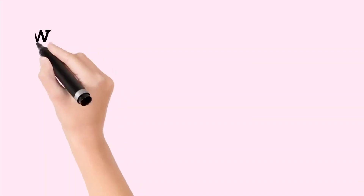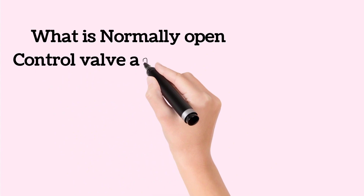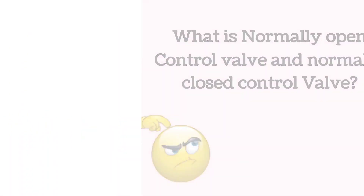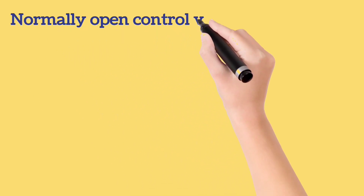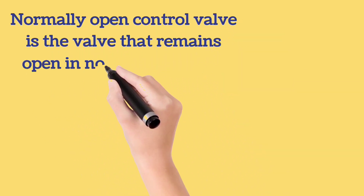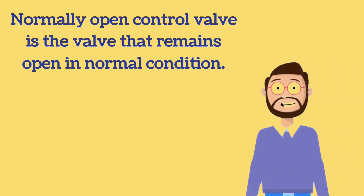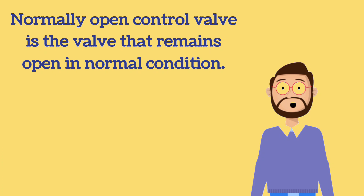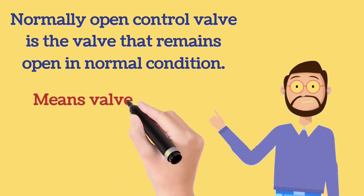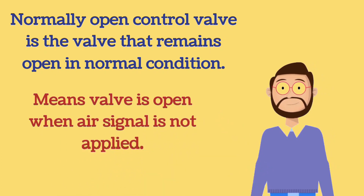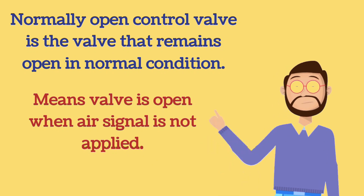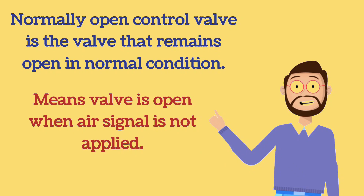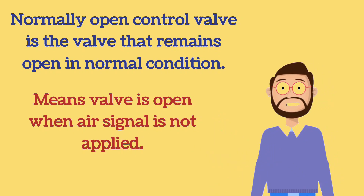The next question is: what is a normally open control valve and a normally closed control valve? A normally open control valve is one that is open in normal condition. Normal condition for a control valve means the absence of air — when the air signal is not applied. The valve that remains open in the absence of air is called a normally open control valve.